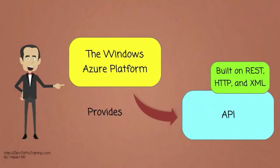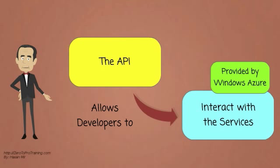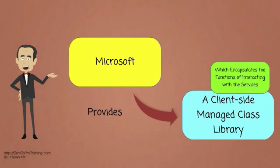The Windows Azure platform provides an API built on REST, HTTP, and XML. The API allows developers to interact with the services provided by Windows Azure. Microsoft also provides a client-side managed class library which encapsulates the functions of interacting with the services.